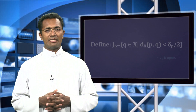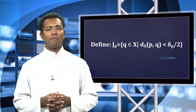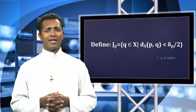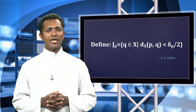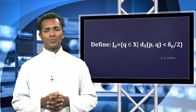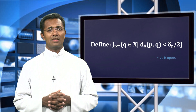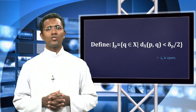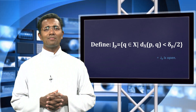We define a new set J_p as the set of all q in X such that the distance between p and q is less than delta_p over 2. Obviously, J_p is an open set. As this is true for all p in X, the collection of J_p covers X.